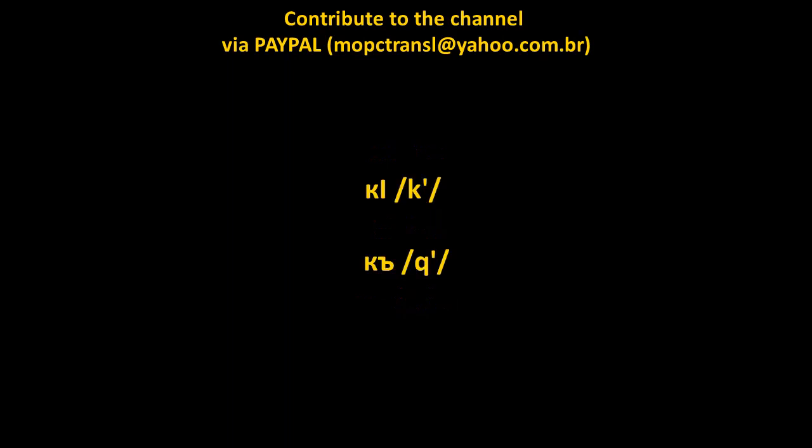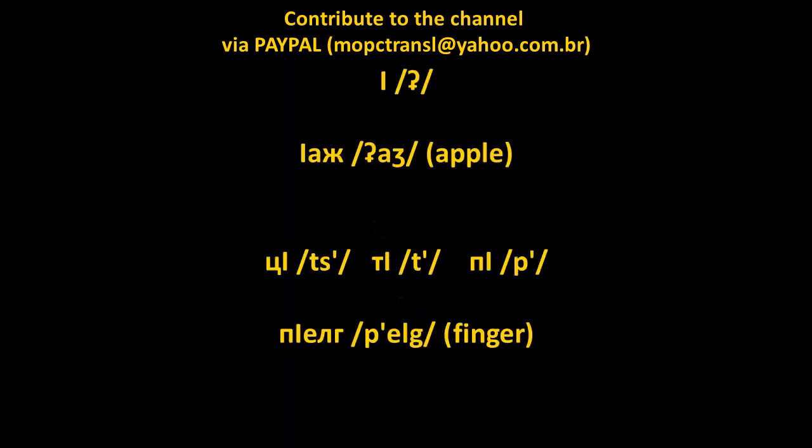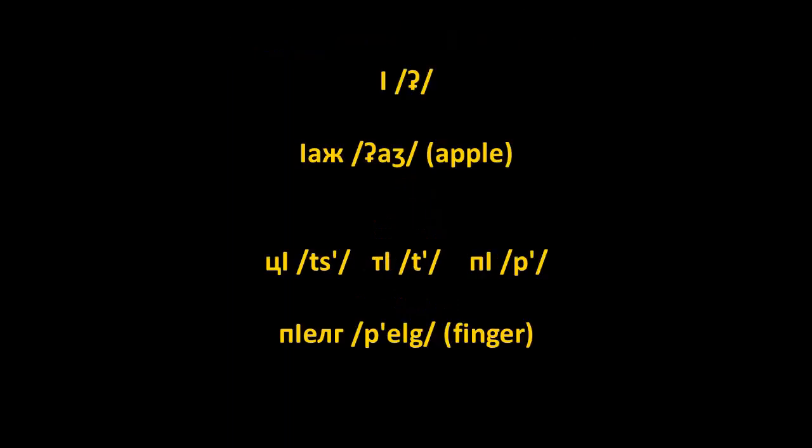Chechen has ejective consonants — so there is K and there is K' (ejective K). The palochka alone, the capital I shape, has the sound of a pharyngeal stop, similar to the Ain of Arabic. So a word like apple is aj.